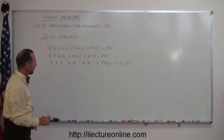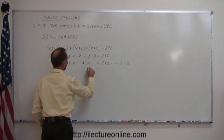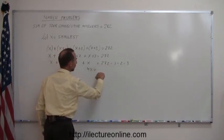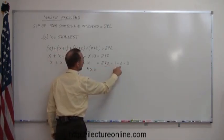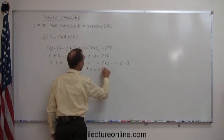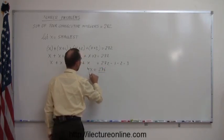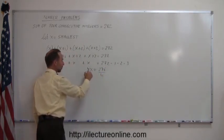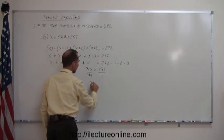Next step is to add all the x's together, so that gives me 4x on the left side. I add all the numbers together, 282 minus, that would be minus 6, that would be 276. And then we divide both sides of the equation by the numerical coefficient in front of the x, so we get x is equal to, that would be 4 goes into 280...